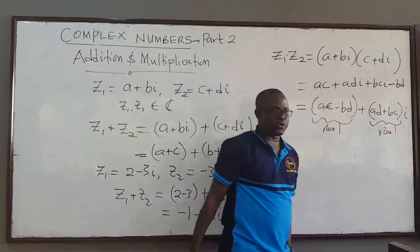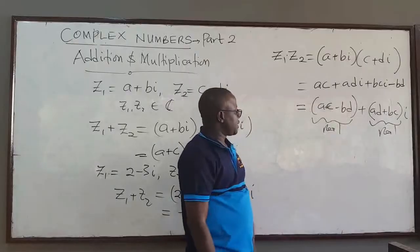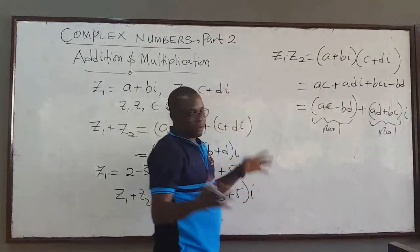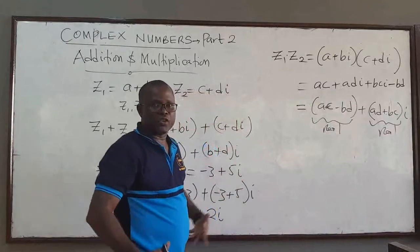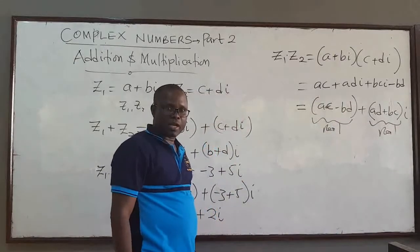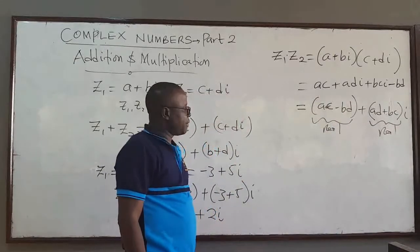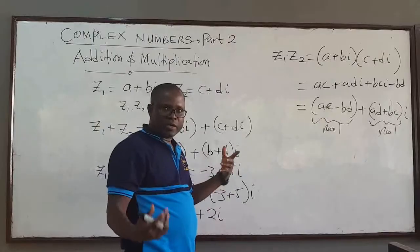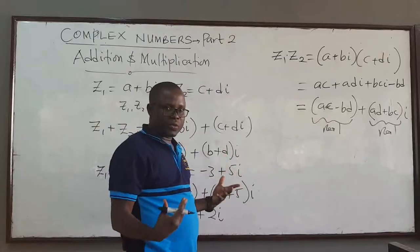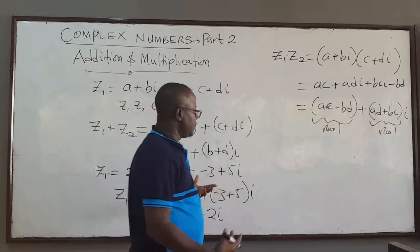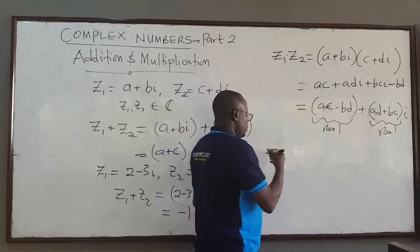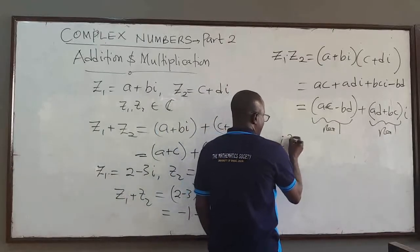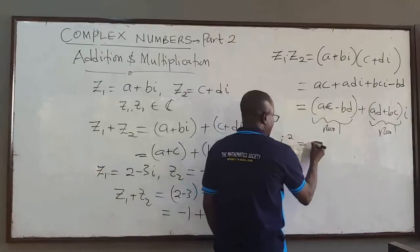Note that AC minus BD is real, and AD plus BC is also real. So when I multiply two complex numbers, I end up with a complex number as well. That's how you multiply complex numbers — you just do it as you do for polynomials, and just take note that i squared is equal to negative 1.